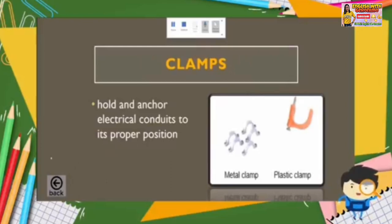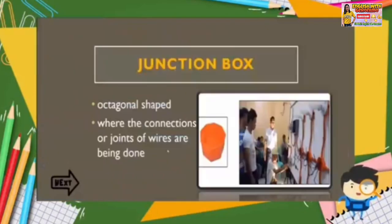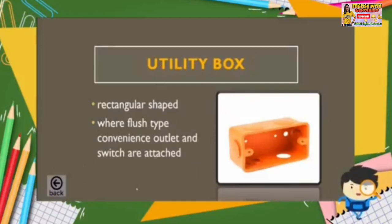The next material is junction box. Junction box, as observed in the video, is in octagonal shape. It is where the connections or joints of wires are done, and also where the lamp holder is attached so that the wirings behind the lamp holder can be protected inside the junction box. The utility box is in rectangular shape, where flush-type convenience outlet and switch are attached. They are used to protect the wires and their connections in the wiring installation.